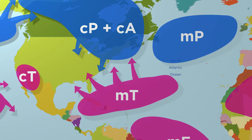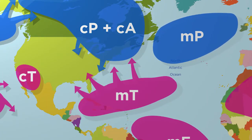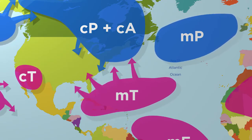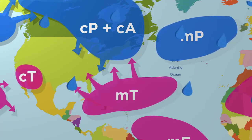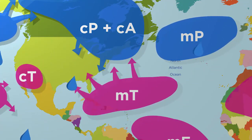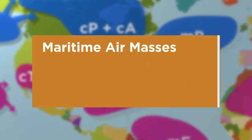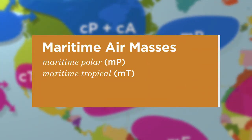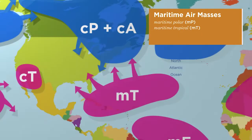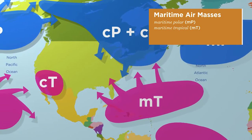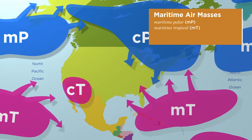Maritime air masses are found over large bodies of water, like oceans. Since these air masses originate over the water, they are full of moisture. They often carry precipitation when they move into an area. The two types of maritime air masses are maritime polar and maritime tropical. Maritime polar air masses are cold and moist, while maritime tropical masses are warm and moist.